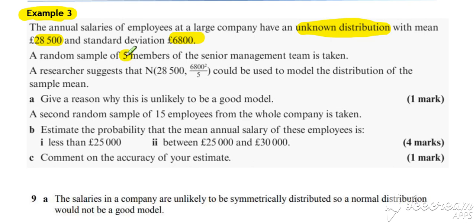A random sample of five members of the senior management team is taken. Research has suggested that this normal distribution could be used to model the distribution of the sample mean. Give a reason why this is unlikely to be a good model.